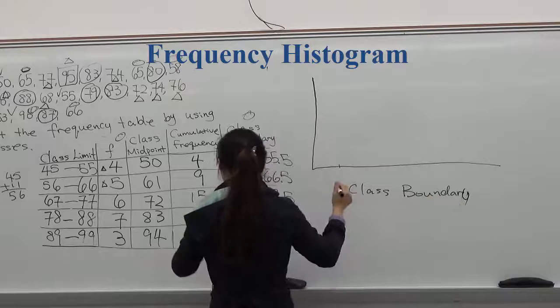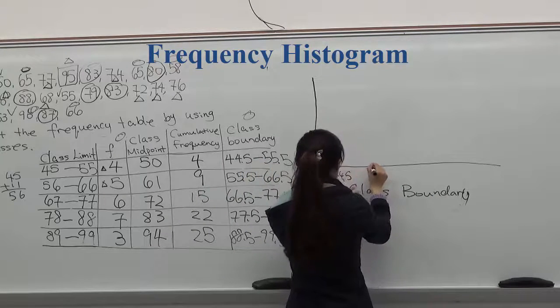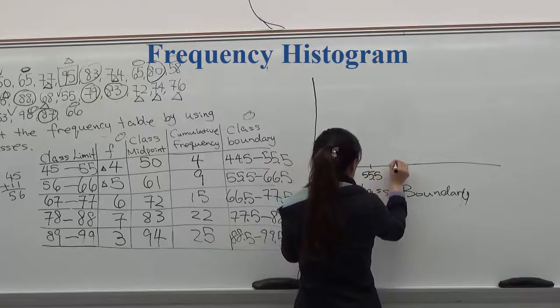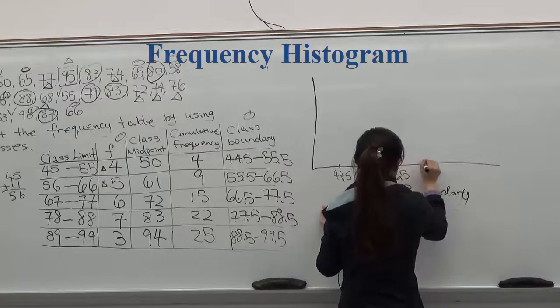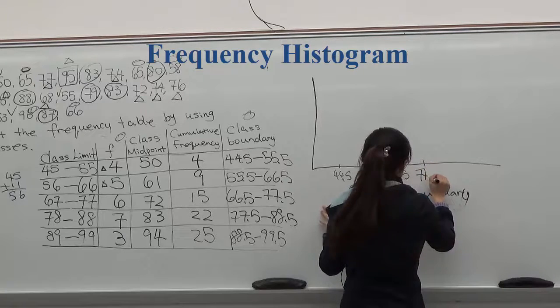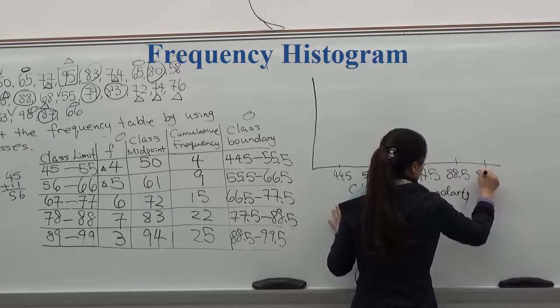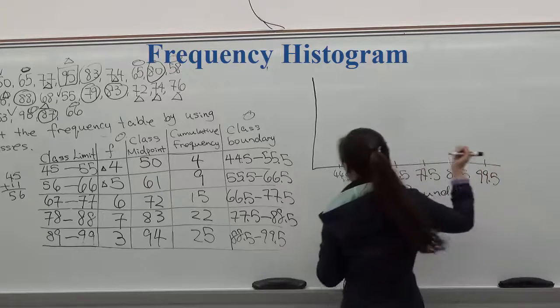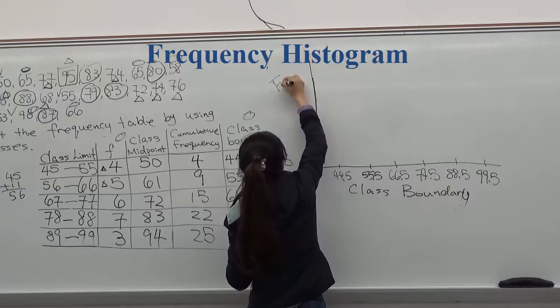And you put all the class boundaries on the x-axis. We'll start with the first number, 44.5. And 55.5 to 66.5, 77.5, 88.5 to 99.5.